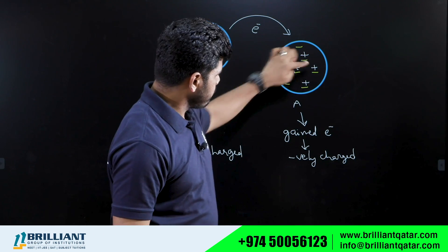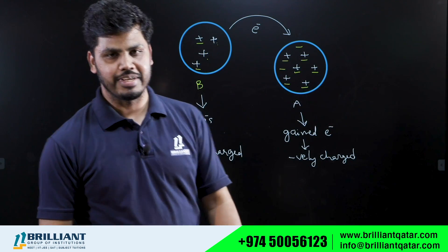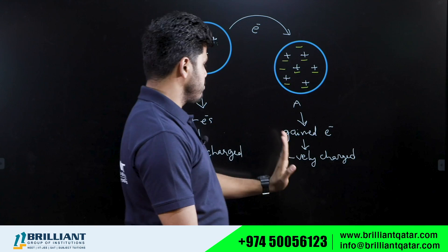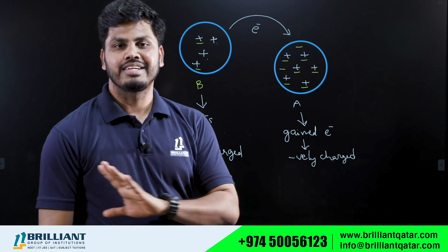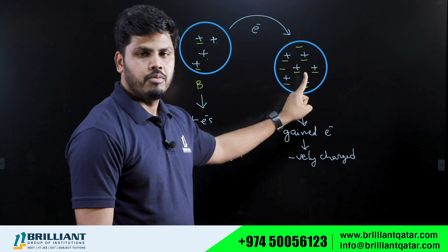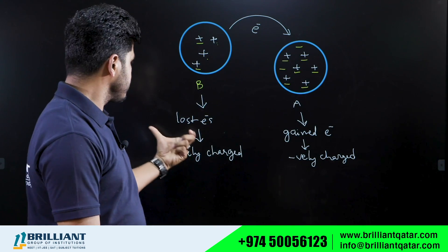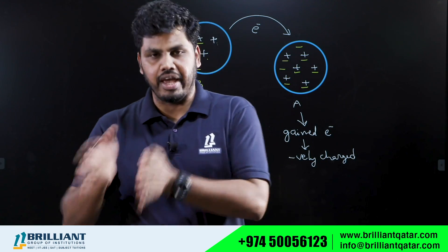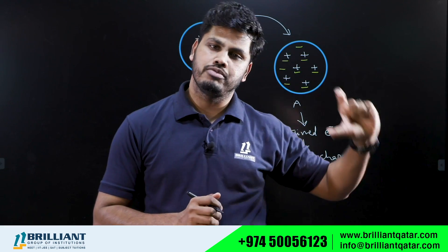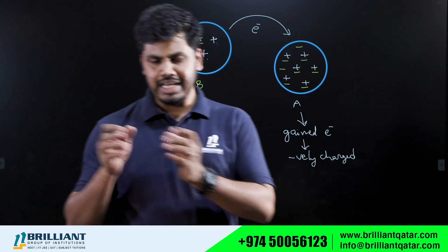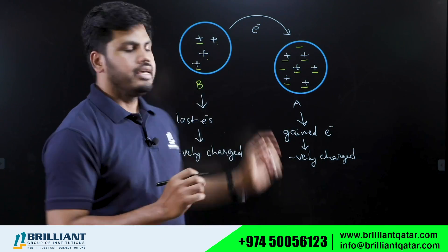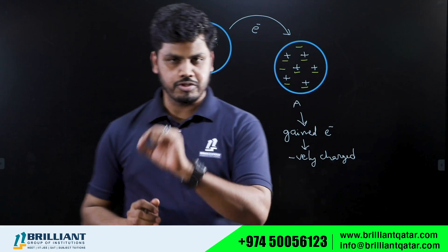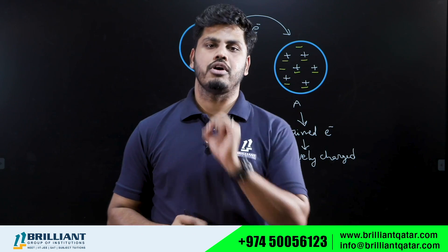For example, if there are six positive charges and eight negative charges in a body, it has excess electrons and is negatively charged. Both body A and body B are now charged. Whatever the magnitude of the charge of A, it will be equal to the magnitude of the charge of B, because equal numbers of electrons were transferred — electrons lost by body B equal electrons gained by body A.